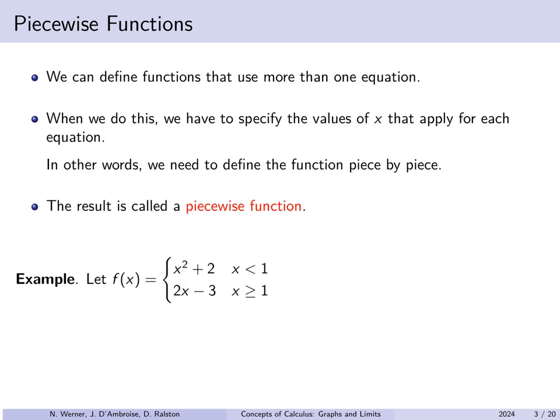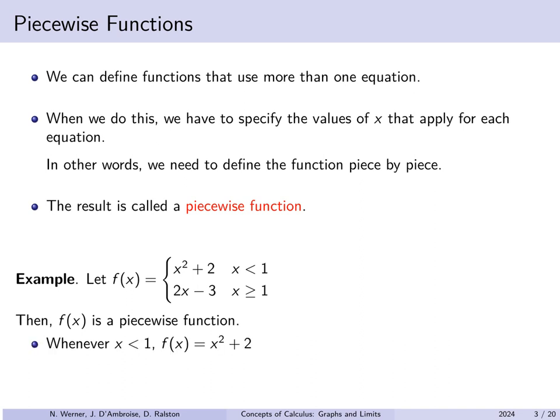Here's an example. Let f of x equal x squared plus 2 when x is less than 1, but equal 2x minus 3 when x is bigger than or equal to 1. f of x is defined piecewise. When x is less than 1, we use the equation f of x equals x squared plus 2. But when x is bigger than or equal to 1, we use the equation f of x equals 2x minus 3.